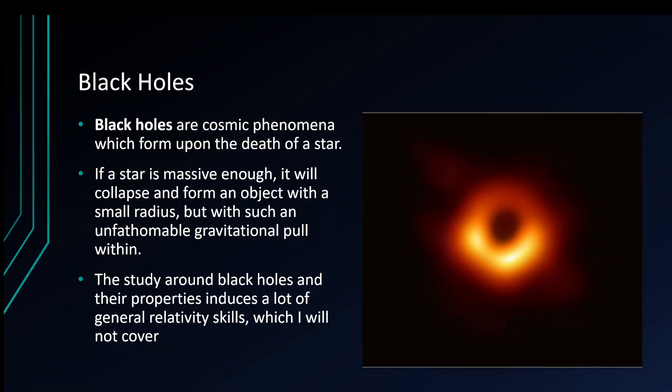One important thing about black holes is the radius — I'm going to do a separate video on that. In short, a black hole is what happens when a star collapses: it emits pretty much no light and has an immense gravitational pull.